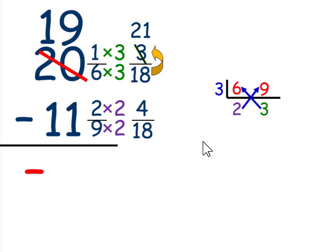21 minus 4 is 17 18ths and 19 minus 11 is 8. But my answer is negative. I won't forget it because I placed my negative sign the moment I wrote the opposite. So I have the opposite of the opposite is the same.